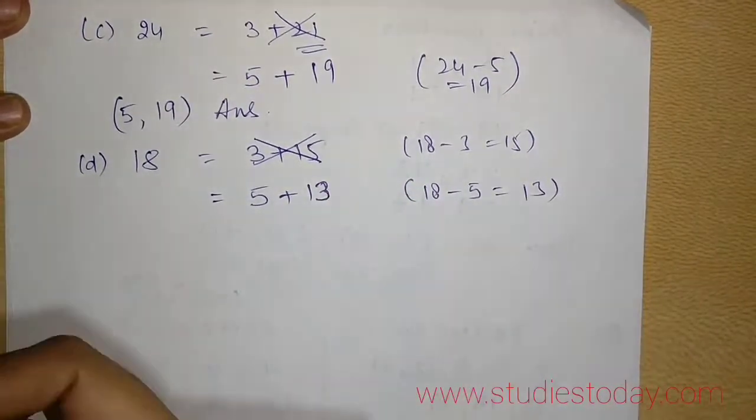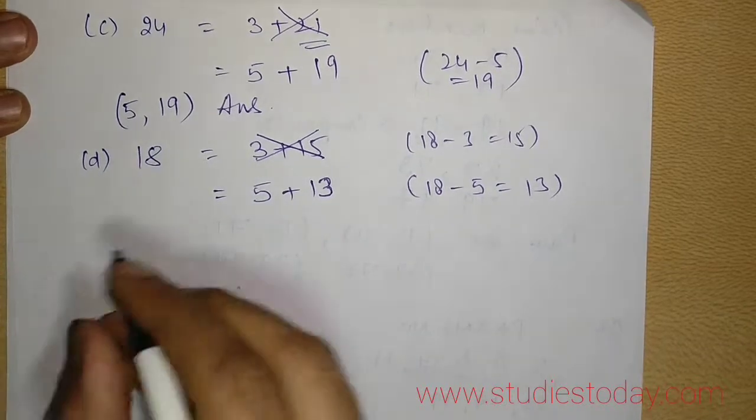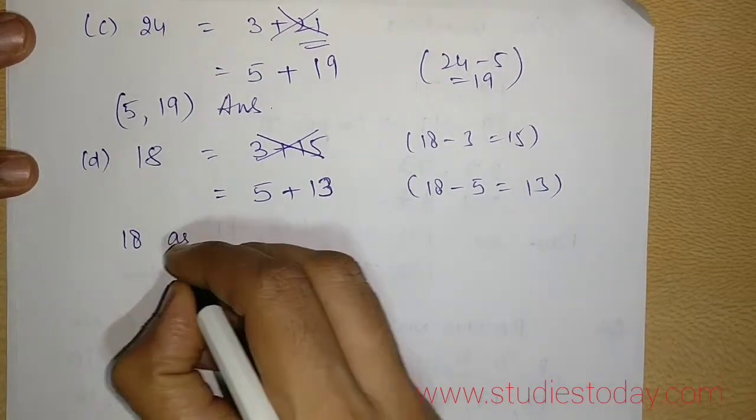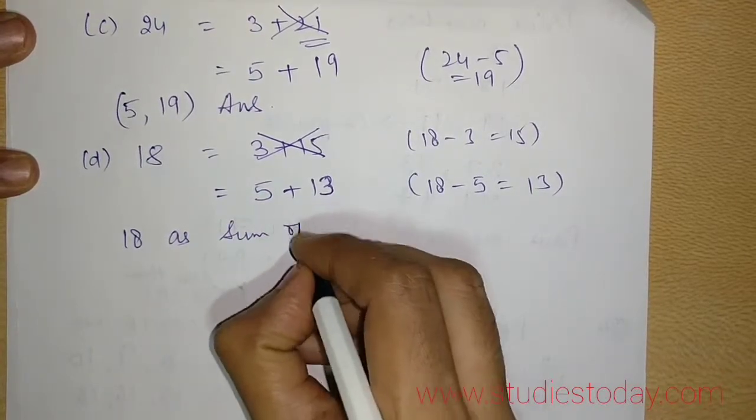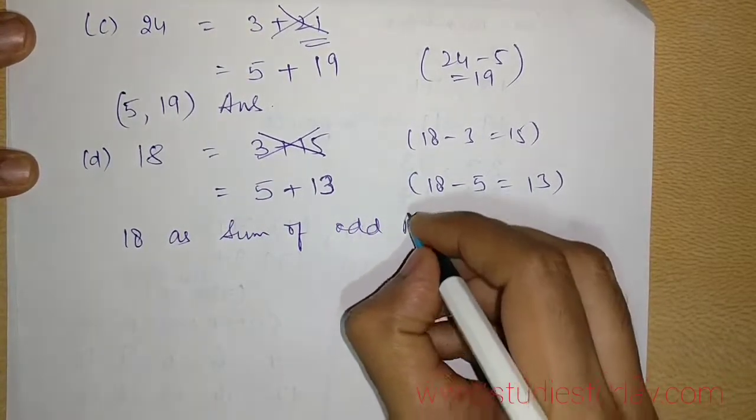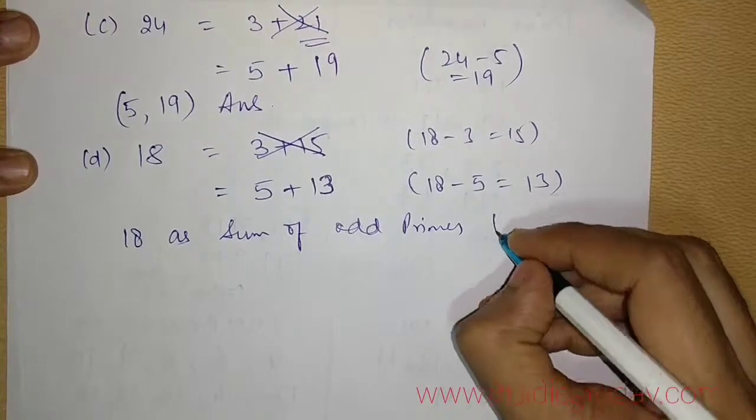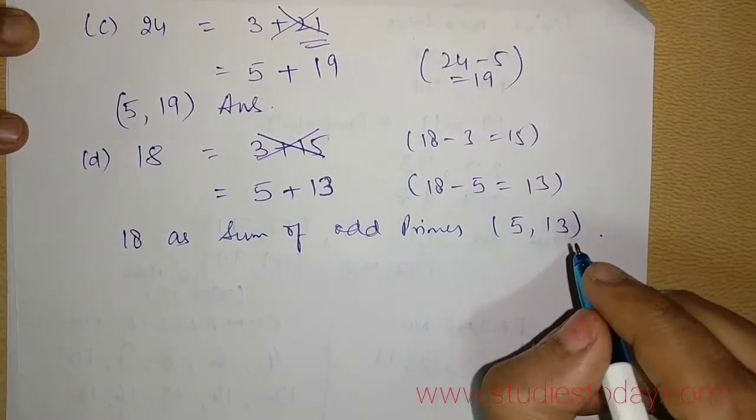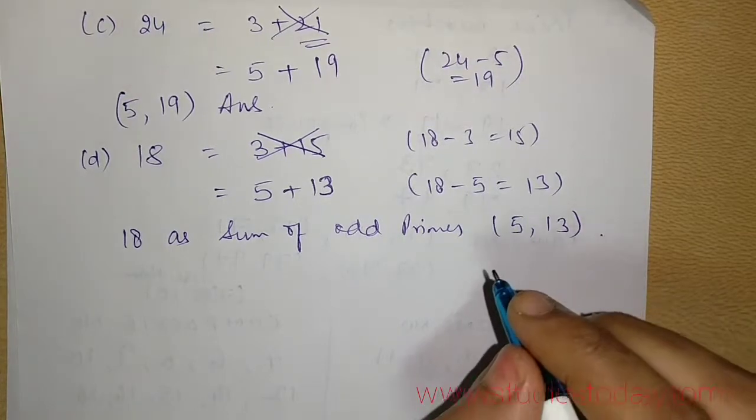You can take any other set also which you find is feasible. So again I can write 18 as sum of odd primes. Which odd primes? 5 comma 13.